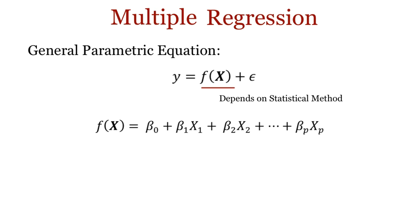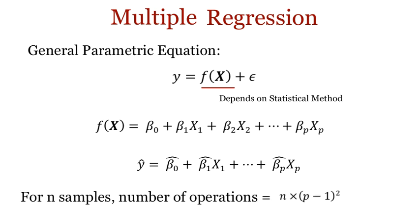So the estimated value of the response variable y is given by this equation. This is exactly the same as was with the case of linear regression, with just more covariates. To compute the response variable for a given sample iteratively, we would need p-1 multiplications and p-1 additions. So for n data samples with p covariates each, we would thus have n times p-1 the whole square such operations.